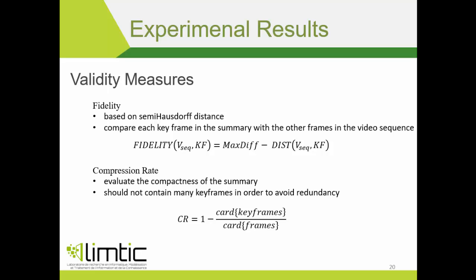For validity measures, we use fidelity and the compression ratio. The fidelity measure is based on the semi-Hausdorff distance to compare each keyframe in the summary with the other frames in the video sequence. High fidelity values indicate that the extracted keyframes provide a good and global description of the visual content of the sequence. The compression ratio is computed by dividing the number of keyframes in the summary by the length of the video sequence, to evaluate the compactness of the summary.